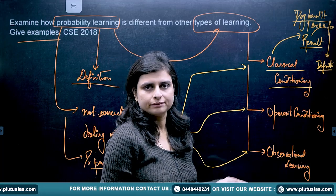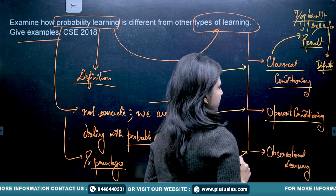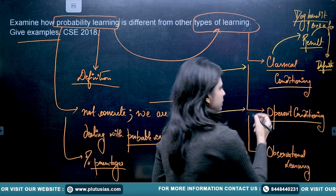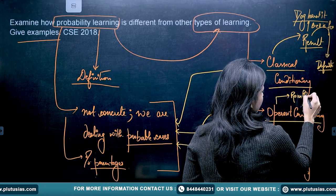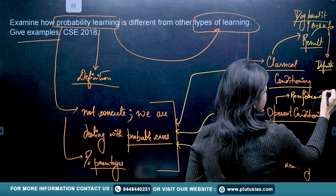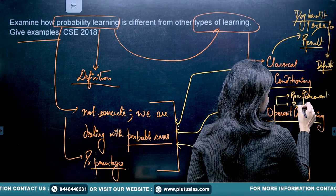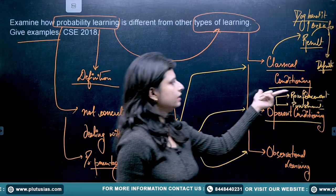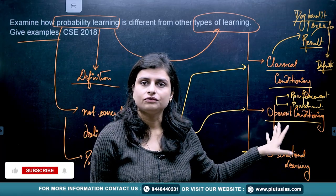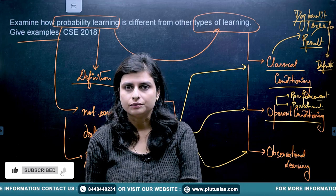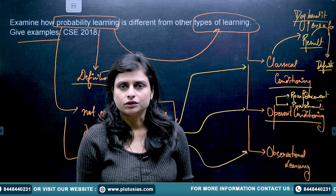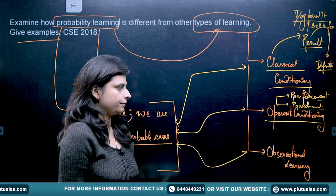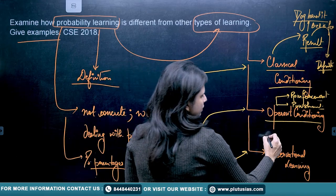Operant conditioning is about making changes in behavior. Here we are using reinforcement and punishment methods. You compare probability learning with operant conditioning by noting that once we use reinforcement, the behavior of the person changes; when we use punishment, the behavior also changes. So it is not about probable cases — it produces definite results, which is different from probability learning.